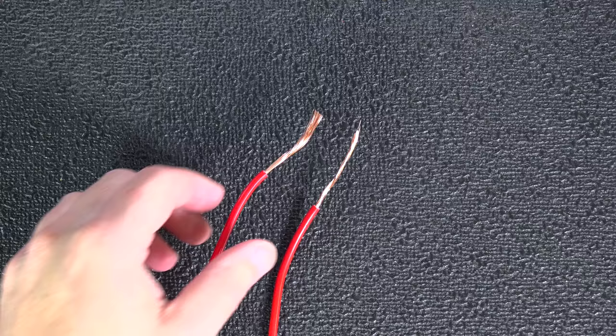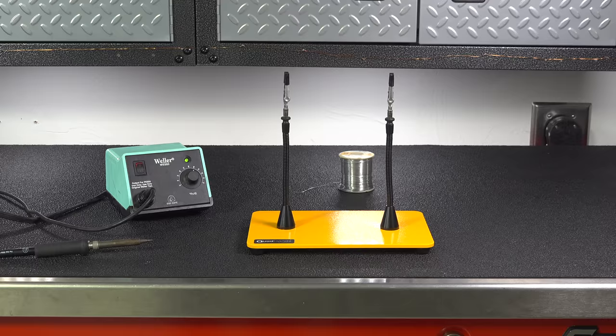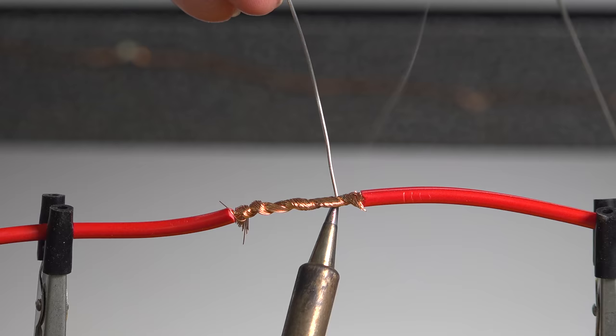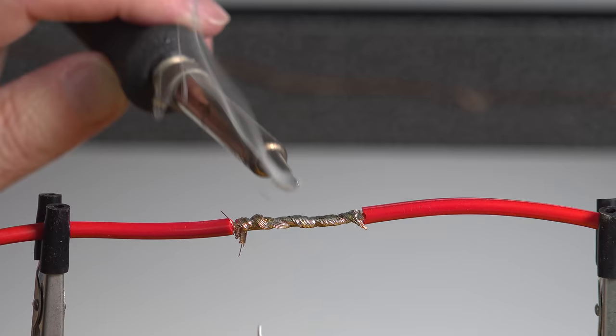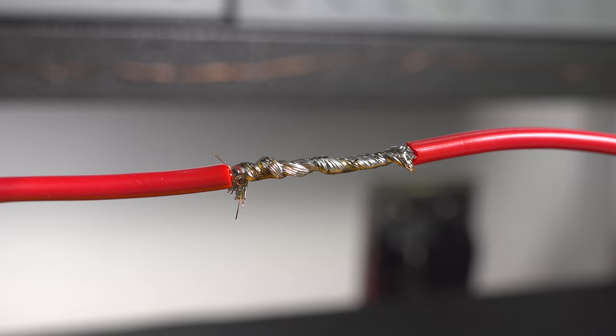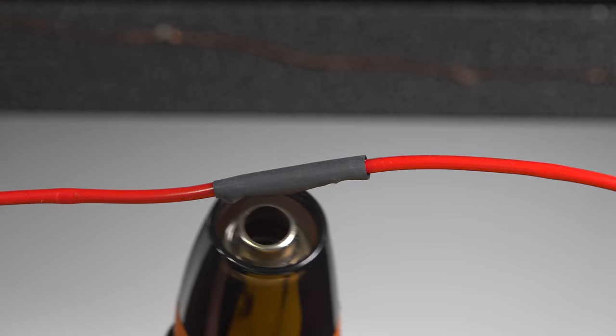Now pros will tell you to go ahead and solder the wire, but you've really got to know what you're doing. But even when you're finished, it's not done because you've got to cover it up. So most people will use the type of heat shrink tubing like this.